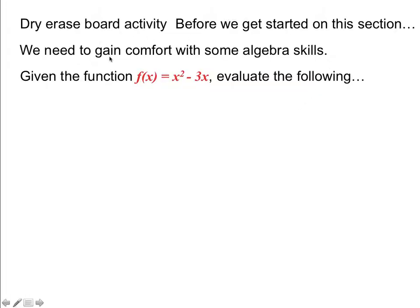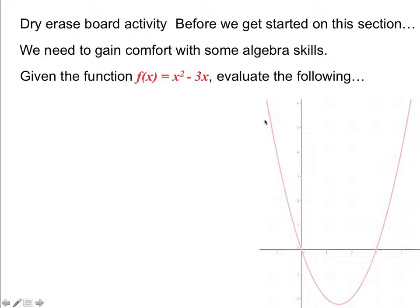Before we get started on this section, we're going to gain some comfort with some algebra skills. Here's a function: x squared minus 3x. This is a parabola opening upward. Let's evaluate the value when x is equal to 0. When we plug in 0 into the function, we get a y value of 0, so we're at the origin.